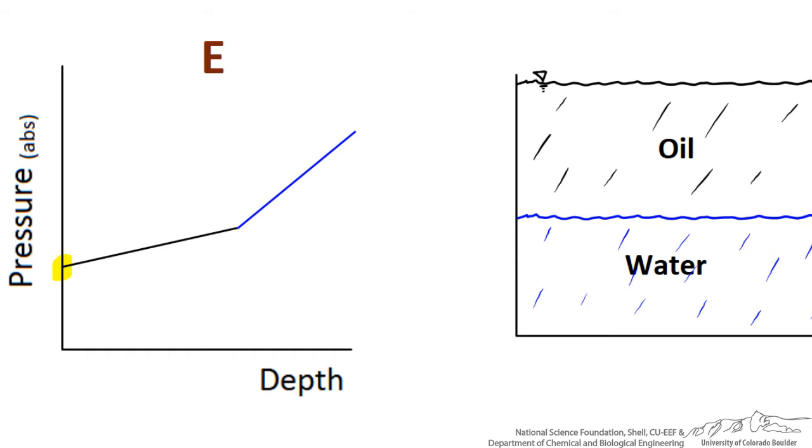There is a change in the relationship at the interface between oil and water. This plot indicates that the pressure increases with depth to a greater degree in the water than in the oil. That means the slope of the line for water is greater than that of the oil. Is this accurate?